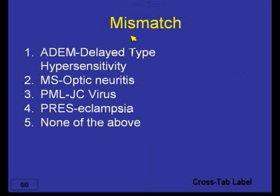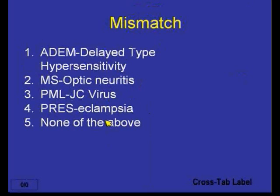The correct answer is none of the above. ADEM is a delayed type hypersensitivity reaction to the white matter and is an immune-mediated abnormality. We see optic neuritis in the course of MS — about 80% of patients with multiple sclerosis will have an episode of optic neuritis. PML with the JC virus is correct. PRES with eclampsia or malignant hypertension — those are correct answers as well. So the correct answer was none of the above.